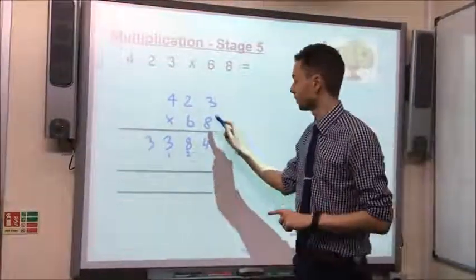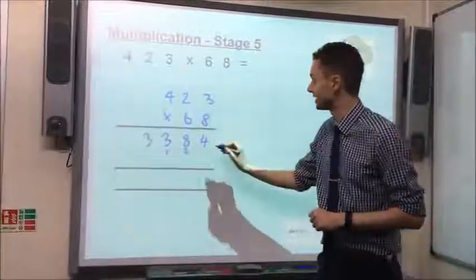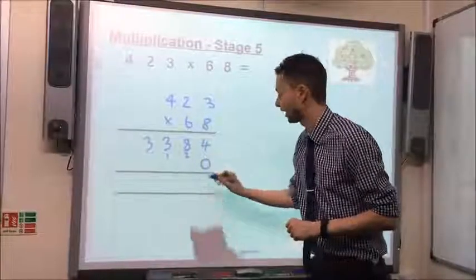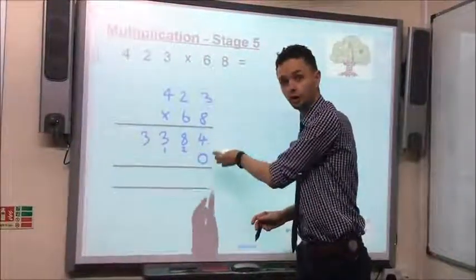Now the next stage is to multiply it by the tens, this 6 tens here. As we are multiplying by the tens, we need to include a placeholder at this stage. So that involves putting a 0 on the second line of the calculation.